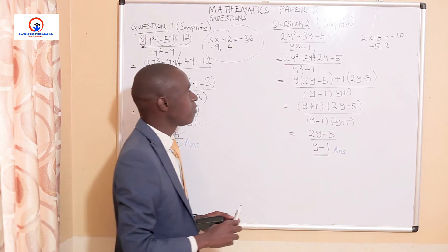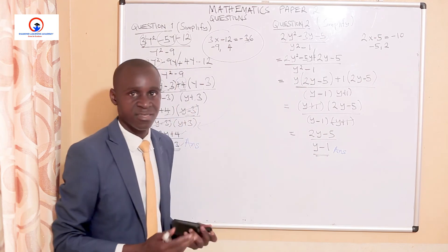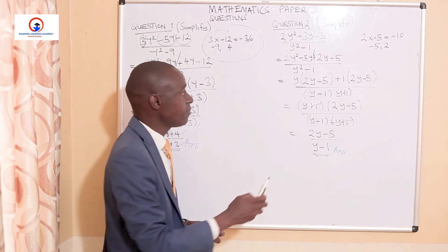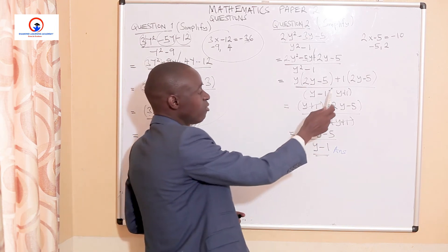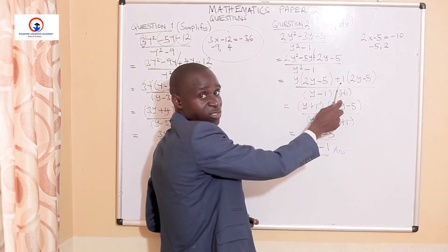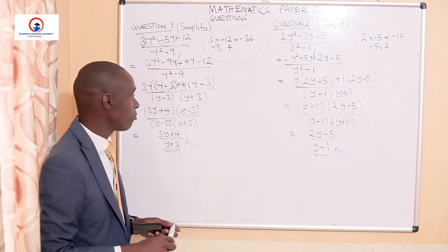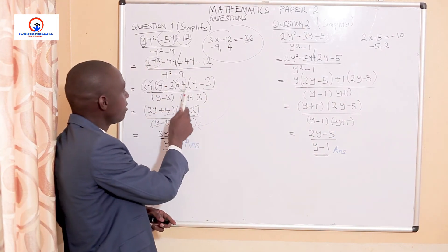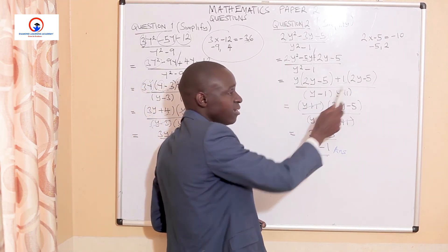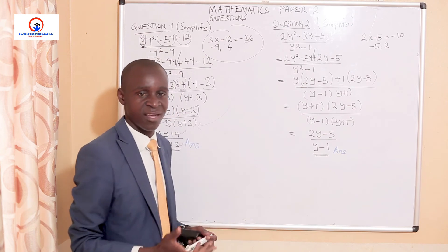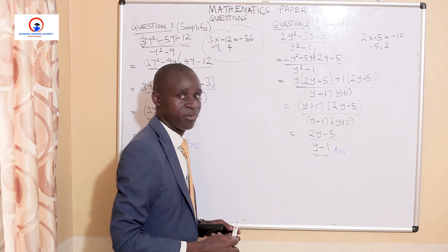Moving on to the next part, which is positive 2y minus 5. Same principles, same concepts — what is common between them? The common part is positive 1. So I've removed positive 1. What has remained is 2y minus 5. Just like from the first expression we saw y minus 3 and y minus 3 appear twice, here 2y minus 5 and 2y minus 5 appear — once we check that, it means we're moving in the right direction.